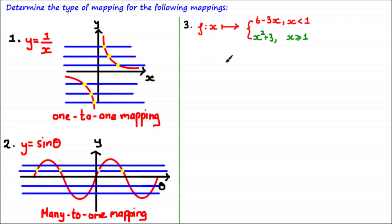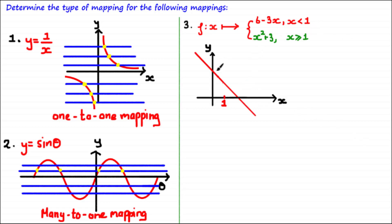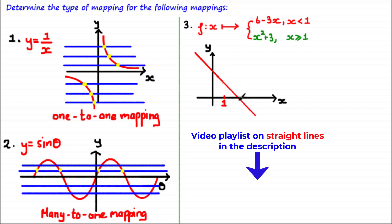Since this is a piecewise mapping, I would strongly suggest drawing the graph to identify the type of mapping. Let's start by drawing y = 6 − 3x for all values of x less than 1. First, draw the full graph of y = 6 − 3x, then adjust it to satisfy the inequality. This is a backward-sloping straight line with a negative gradient; the y-intercept is 6 and the x-intercept is 2.